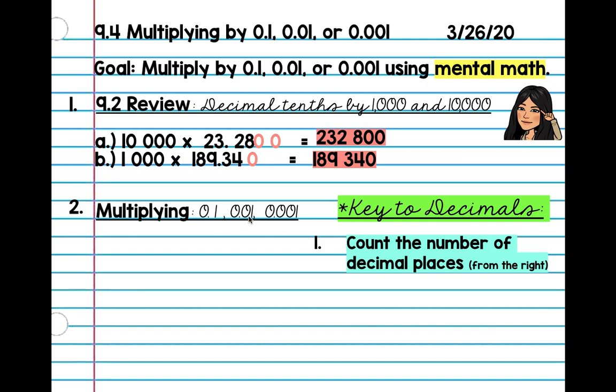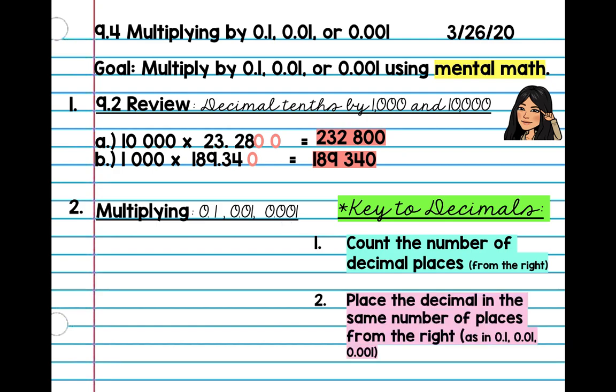So, one tenth has one. One, two. And this one has one, two, three. And that's all you have to remember. You just have to place a decimal in the same number of places from the right as in these decimals. Okay, so let's do this in real time. 245 times 0.1. So, I'm going to go ahead and start from the right. I know it's one decimal place, so I'm going to move that over once. And there we have it, 24.5.